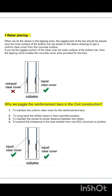Rule 7 is rebar placing. When we tie the rebar in the lapping zone, the joggled part of the bar should be placed over the inner surface of the bottom bar as shown in the figure, to get a uniform clear cover from the concrete surface. If you tie the joggled portion over the outer surface of the bottom bar, then the lapping zone invades the concrete cover area provided for the bars. You can see equal and unequal clear covers in the figure.